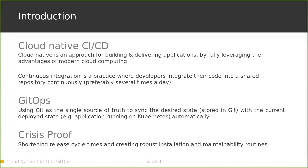CD can stand for continuous delivery or continuous deployment. Continuous delivery is an approach where we have our code always in a state that is deployable — we are able to deploy whatever is checked into git at any given time. Continuous deployment is an approach where we automatically deploy every change we commit to our production environment. GitOps uses git as the single source of truth, syncing everything in git with our target environment so the desired state in git matches the currently deployed state.